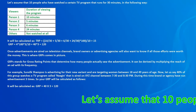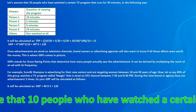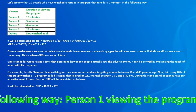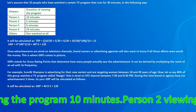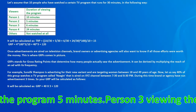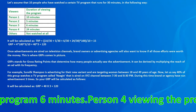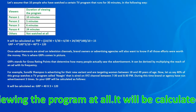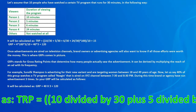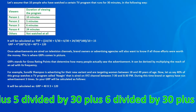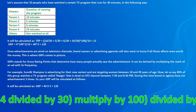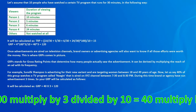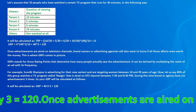Let's assume 10 people watched a TV program that runs for 30 minutes as follows: Person 1 viewed 10 minutes, Person 2 viewed 5 minutes, Person 3 viewed 6 minutes, Person 4 viewed 24 minutes, and the others did not view at all. TRP equals (10/30 + 5/30 + 6/30 + 24/30) multiplied by 100 divided by 10, which equals 15. GRP equals 4 multiplied by 100 multiplied by 3 divided by 10, which equals 120.